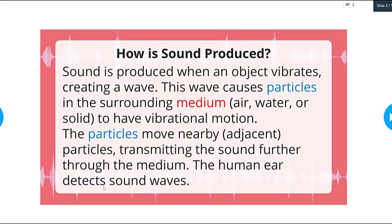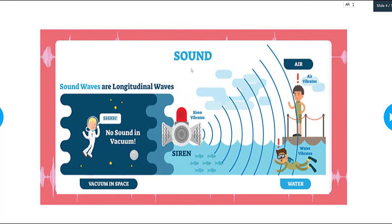Finally, the human ear can detect sound waves. The sound waves can vibrate and can travel through mediums, such as air, liquid, or solids. No sound in vacuum, for example, outer space.